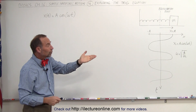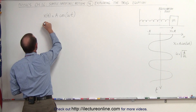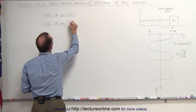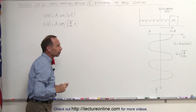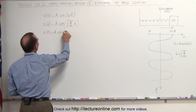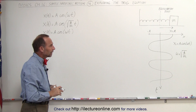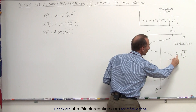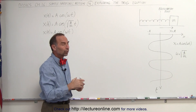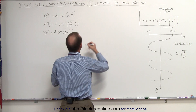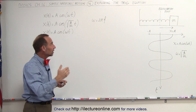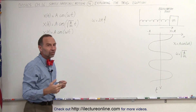Since omega equals the square root of k over m, we can also write this equation as x equals a times the cosine of the square root of k over m times t. Returning to the original equation x equals a times cosine of omega t, the relationship between angular frequency and frequency is omega equals 2 pi times f — for every one complete oscillation there are 2 pi radians in the oscillatory frequency.